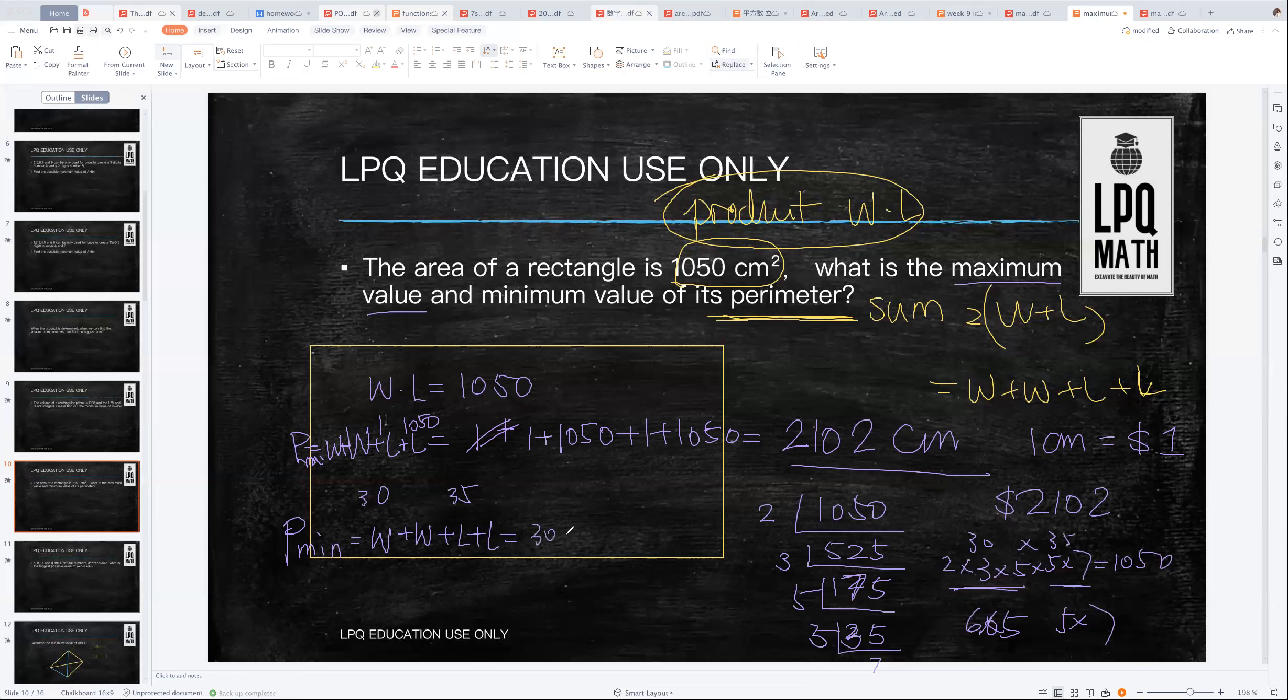So 30 plus 35 plus 30 plus 35. The minimum of the perimeter will be 60 times 70 equals 130 centimeters. So if one centimeter costs one dollar, it only costs you 130 dollars.